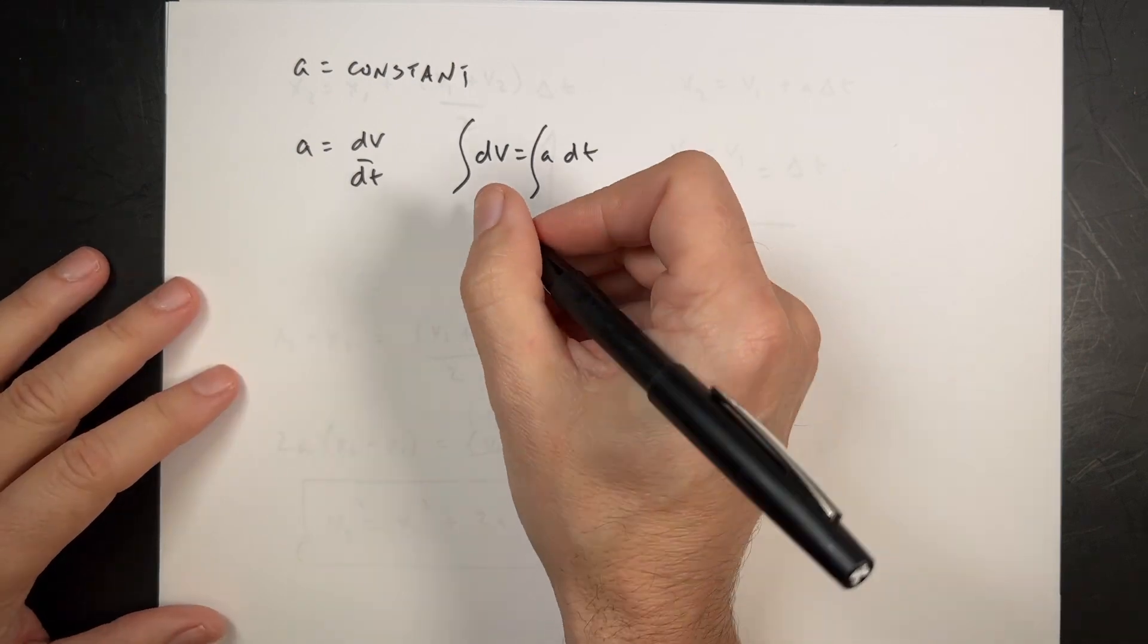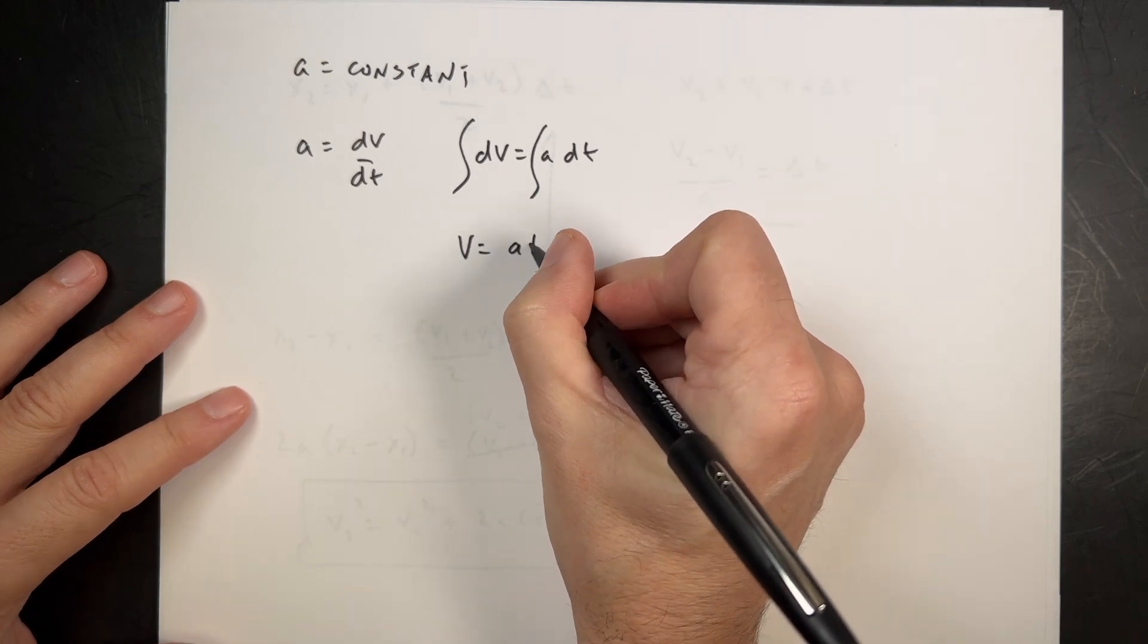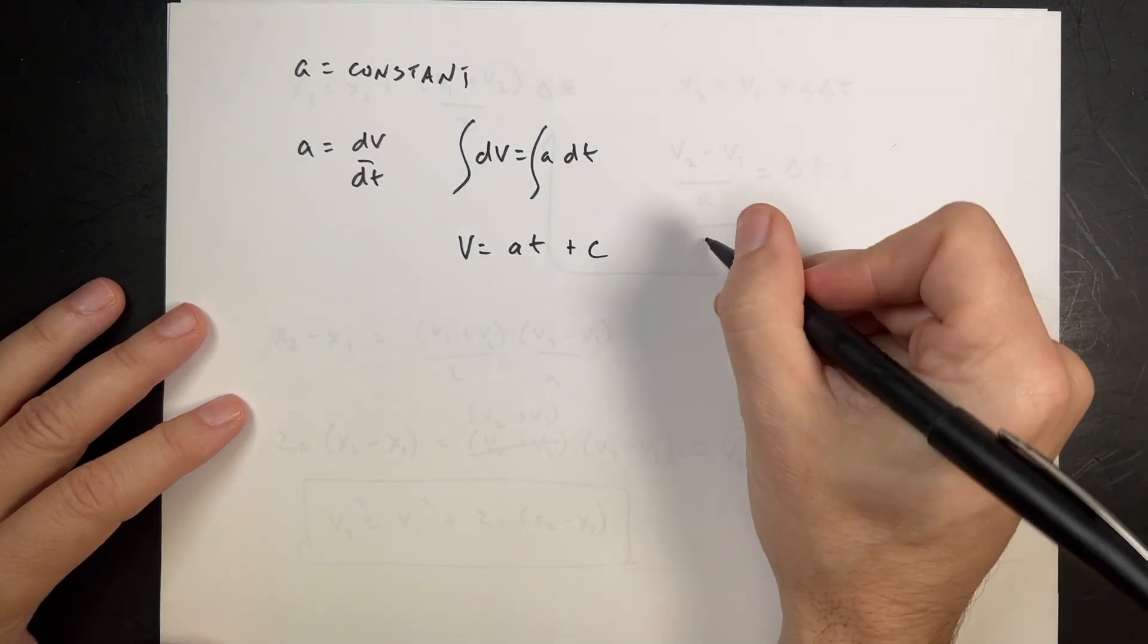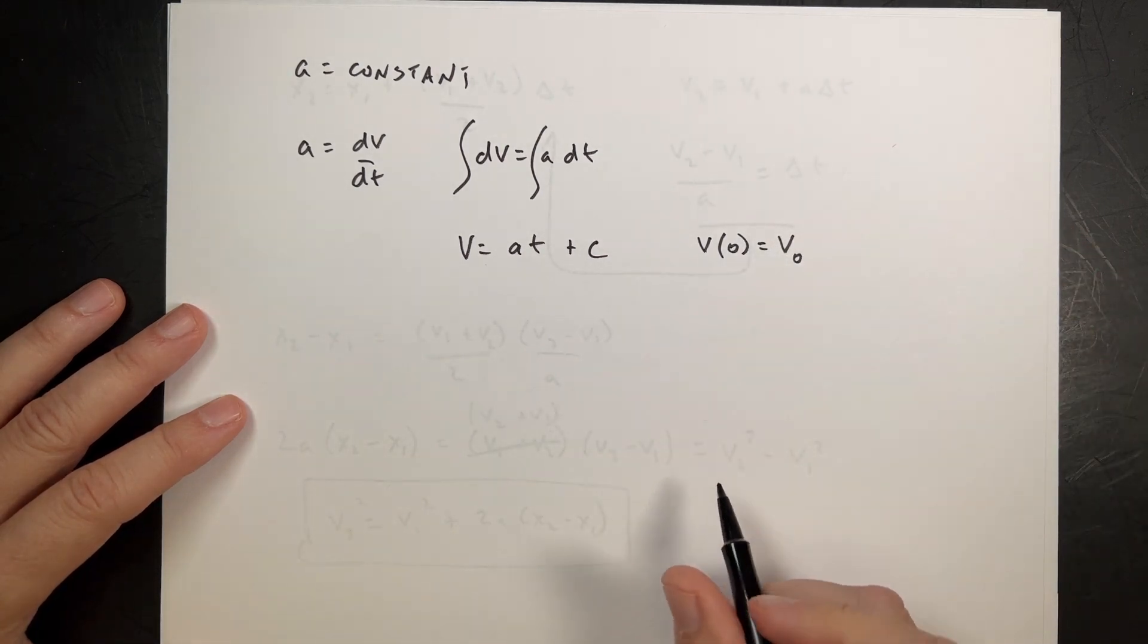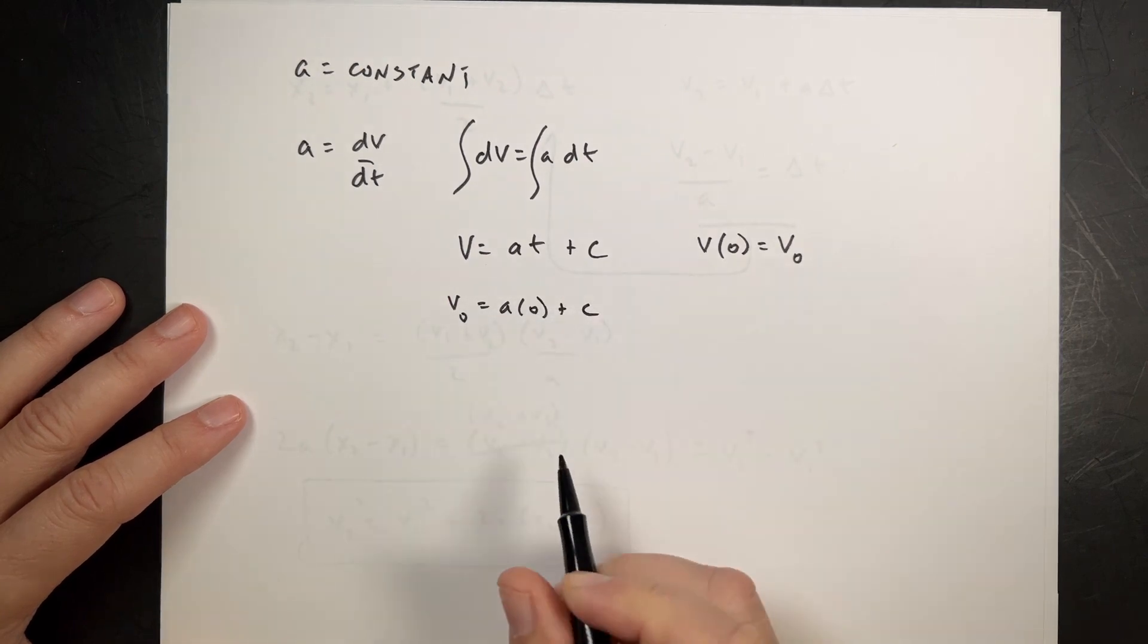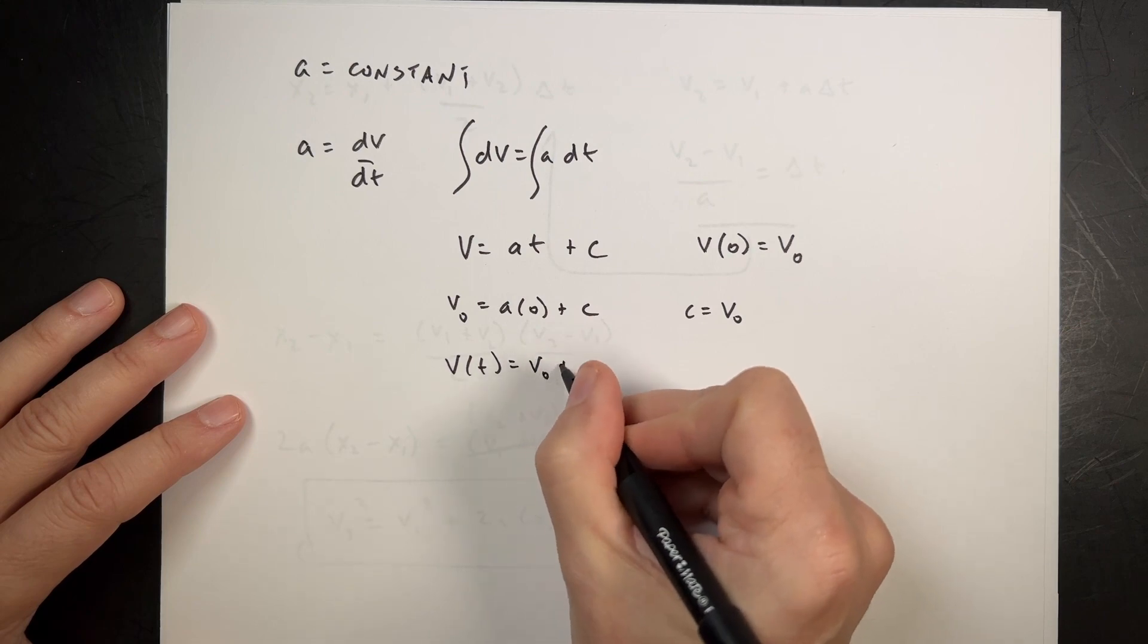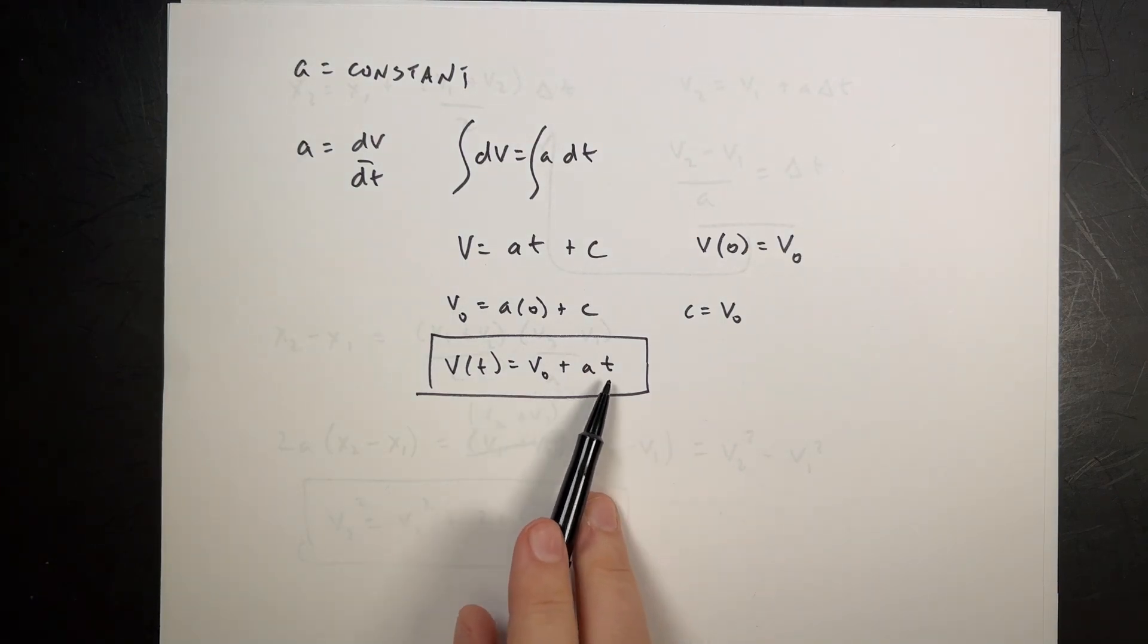But now I have a differential here and a differential there. I can actually integrate both sides of the equation. The integral of dv is just v. And the integral of this side is a t. But I have to add a constant because I didn't do a definite integral. So I need to find that constant. I'm going to say the velocity at t equals 0 is equal to v0. So if I put in t equals 0, I get v0 equals a times 0 plus c, and so c equals v0. So now I can write this as v as a function of time equals v0 plus a t. That's essentially what we had before. This assumes that this is the velocity when t is equal to 0.